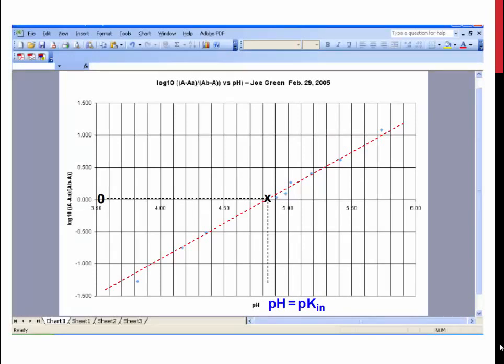Once you have your graph, the log expression of the Henderson-Hasselbalch equation should be plotted on the y-axis, and the pH should be on the x-axis. At the point where the log expression equals zero, the pH will equal the pKin. By interpolating the graph or solving the equation of the line, you can obtain this value. This is shown more clearly on the next slide.